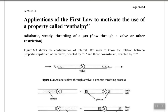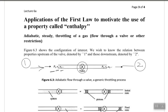Application of the first law to motivate the use of a property called enthalpy. Let's imagine an adiabatic steady throttling of a gas passing through a wall or any other restriction. A gas passes from the upstream at state one to the downstream at state two. At the upstream we have pressure P1, volume V1, and internal energy U1. At the downstream we have pressure P2, volume V2, and internal energy U2. The process is adiabatic, meaning no heat flows into or out of the system.